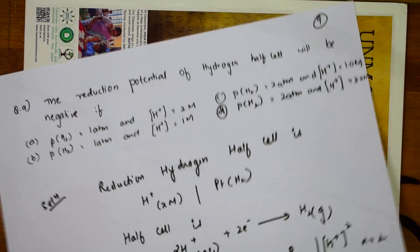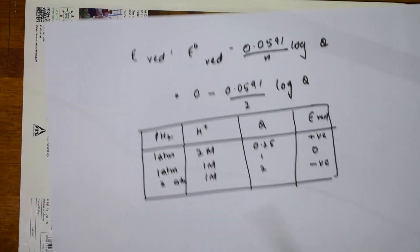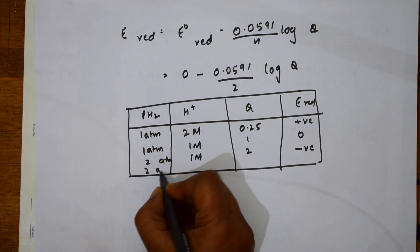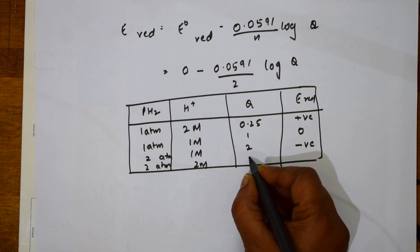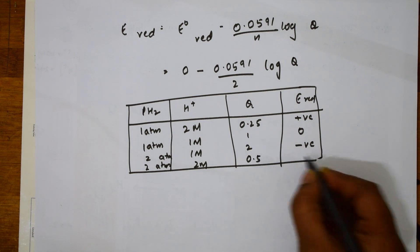For the last one, 2 atmospheres and 2 molar. If I find out using this formula, I will be getting 0.5, which is positive.